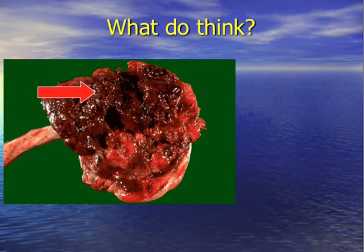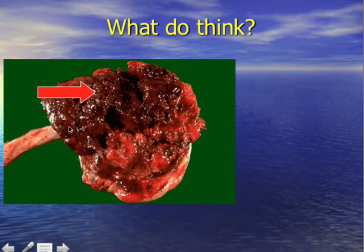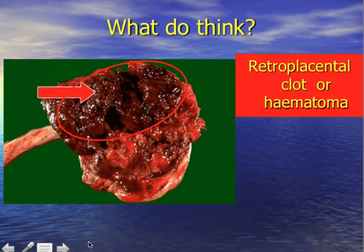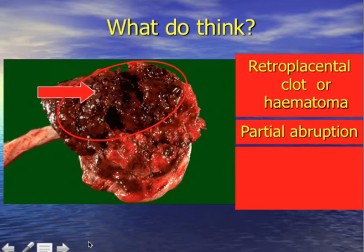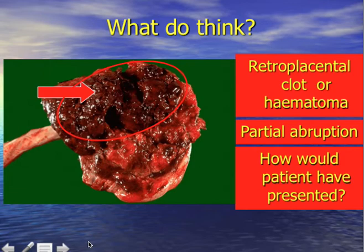Here is another placenta, now looking at the maternal surface. You might already notice some infarcts — white areas — but what stands out is the typical picture of a retroplacental clot or hematoma. This is part of a partial abruption of the placenta, delivered after the baby was born via an emergency lower segment caesarean section. This patient would have presented with antepartum haemorrhage with CTG abnormalities, necessitating a crash caesarean section. The baby came out all right.